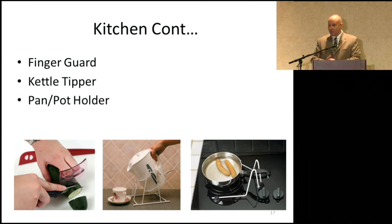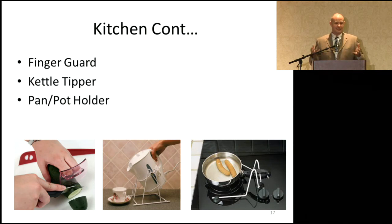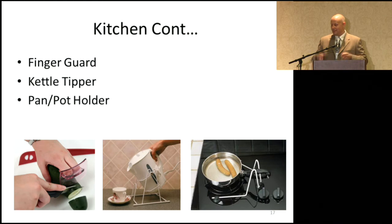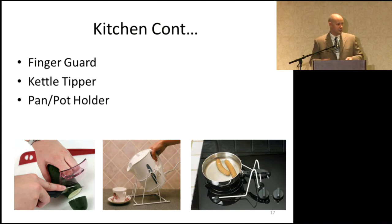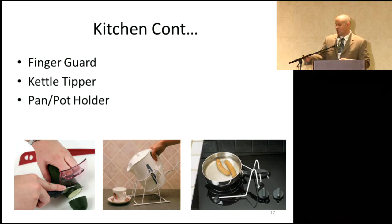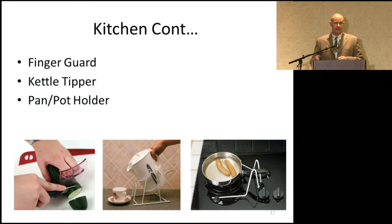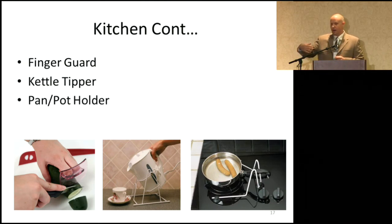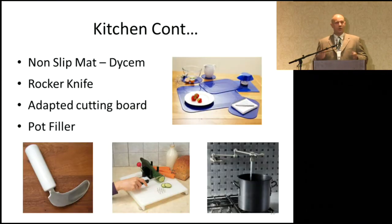Consider a finger guard if you enjoy cooking — it's a plastic guard that goes over the fingers so that if you're using sharp knives and have tremor or dyskinesia, you can still safely engage in cooking. There's also a kettle tipper — rather than free-pouring boiling water, the kettle sits on a pivot so you can pour safely. A pot guard prevents the pot or pan from spinning on the stove. There's also non-slip material called Dycem that can be used under bowls, plates, or anything to prevent slipping on the counter.